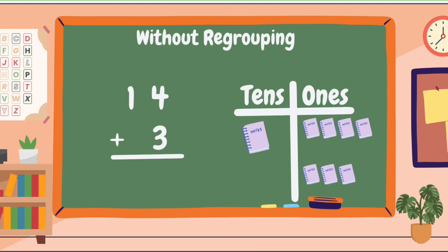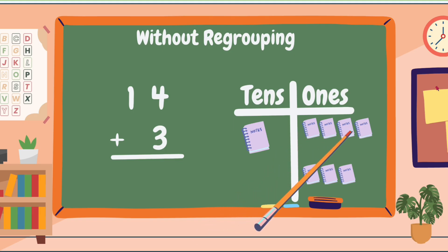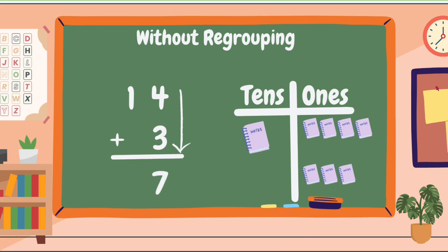Now, let's add: 4 plus 3 equals — let's count the notebooks in the ones column: 1, 2, 3, 4, 5, 6, 7. So 4 plus 3 equals 7. Good job! Next, let's add the tens. In this example, we only have one tens, so we just bring it down beside the 7. Therefore, the sum of 14 plus 3 equals 17.